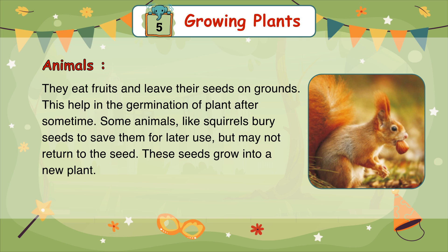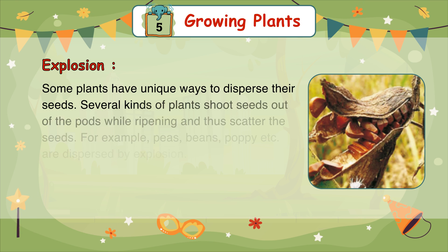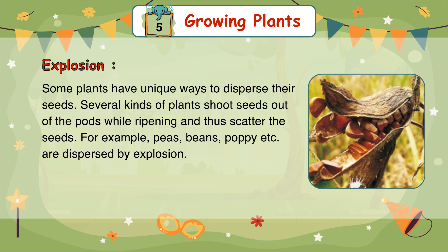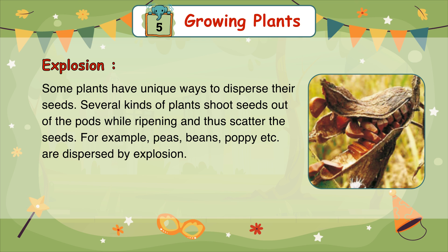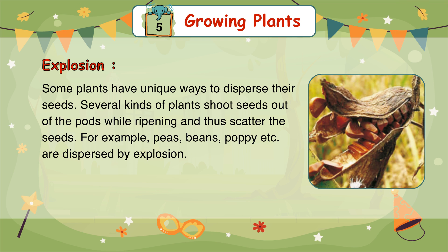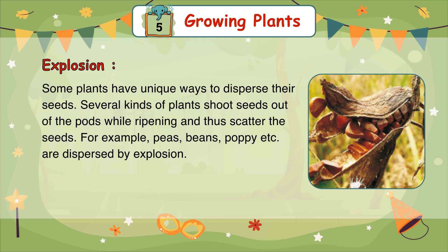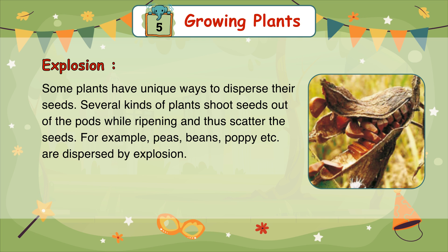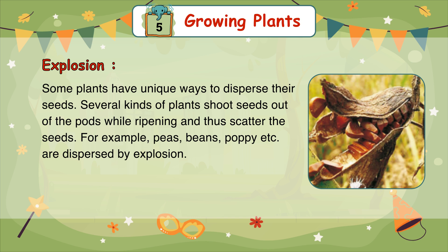These seeds grow into a new plant. Explosion: some plants have unique ways to disperse their seeds. Several kinds of plants shoot seeds out of the pods while ripening and thus scatter the seeds. For example, peas, beans, poppy, etc. are dispersed by explosion.